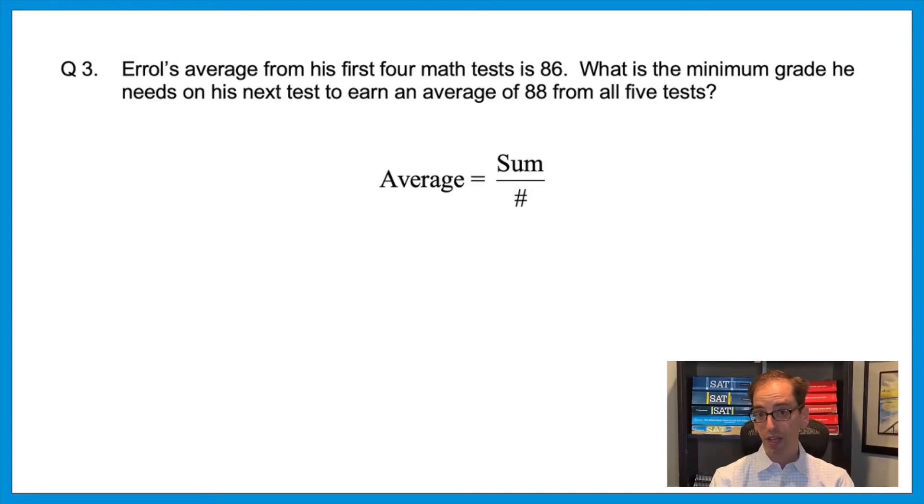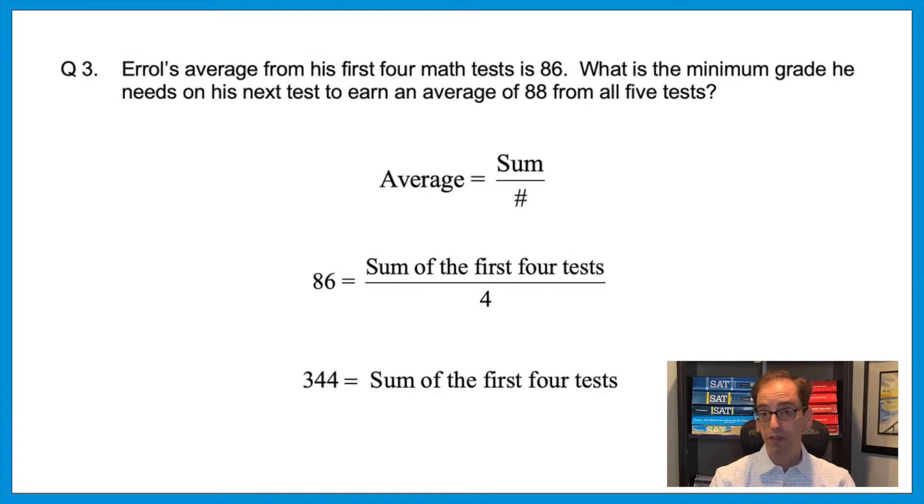So before we get to that fifth test, we have to start with that first piece of information they give us. Four tests have an average of 86. We can plug that into the average formula. In other words, 86 equals the sum of the first four tests over 4. And now to get that numerator alone, we would multiply that 4 to the other side. That means 344 equals the sum of the first four tests. And you don't need to know what they are individually. All we have to know is that the first four tests add to 344.